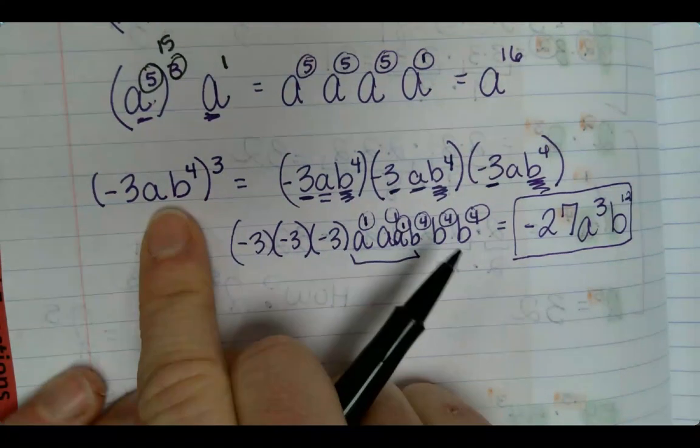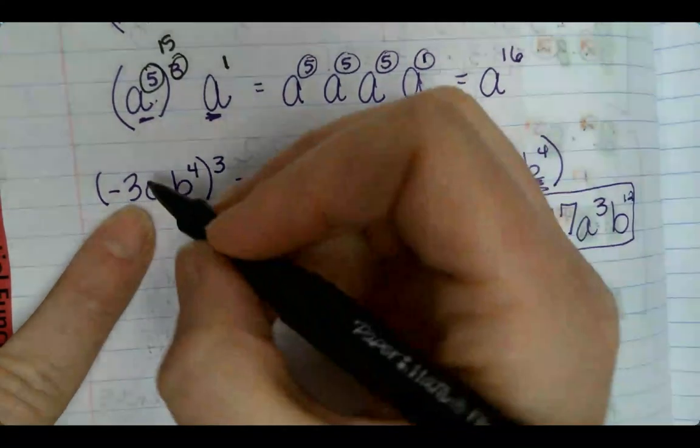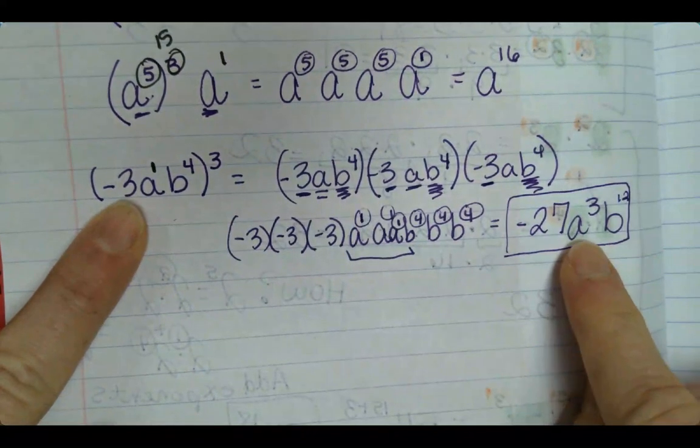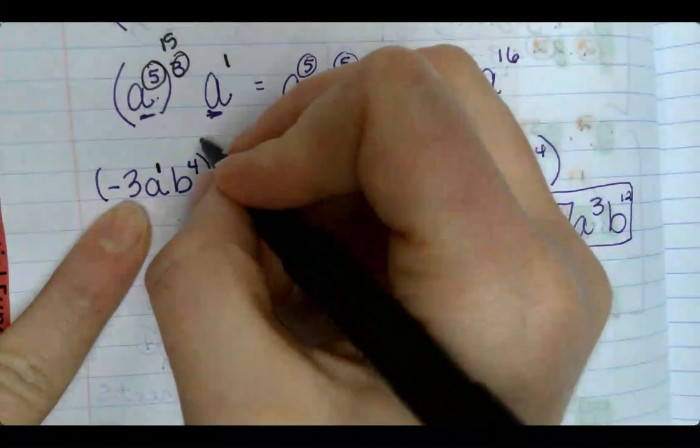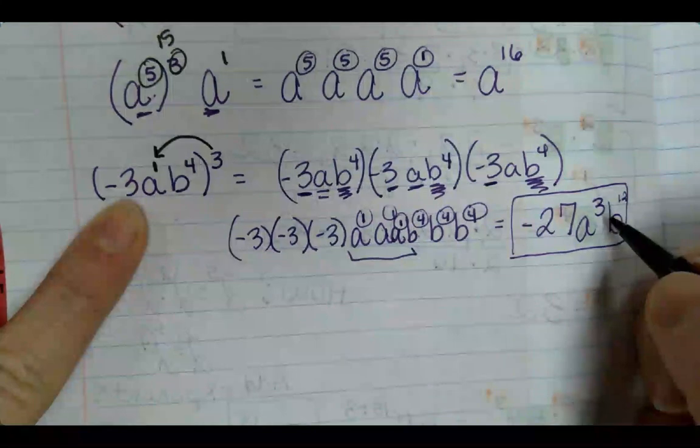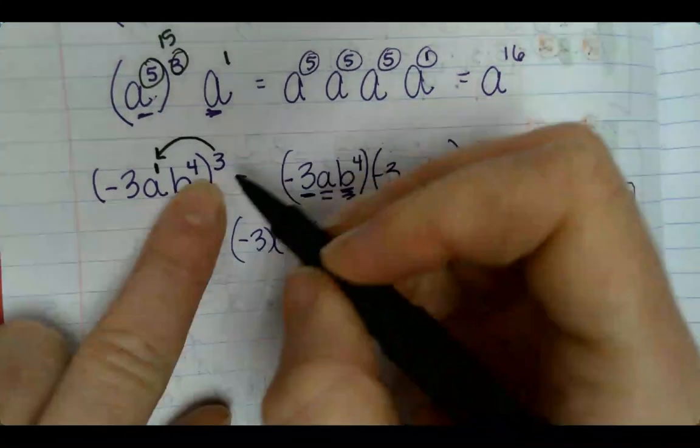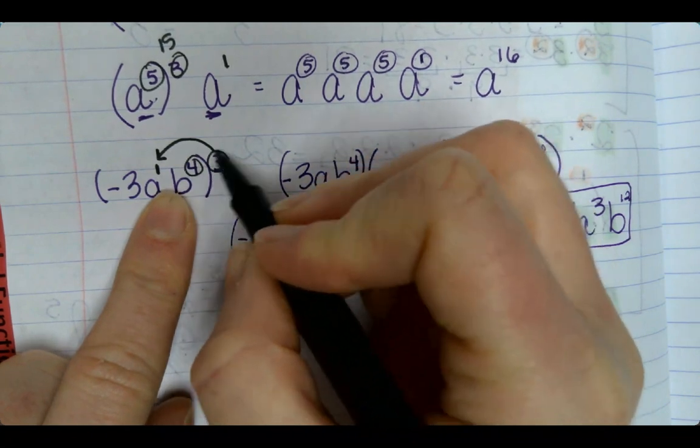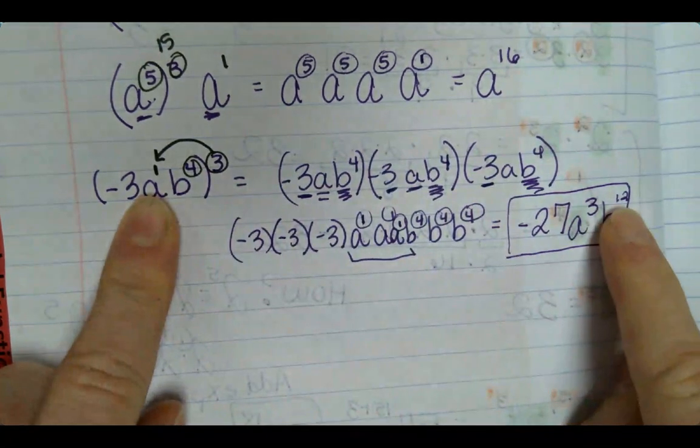Then this next one. A was to the first power, and then what did it become over here? To the third power. And then b to the fourth to the third. What do you do with those exponents?